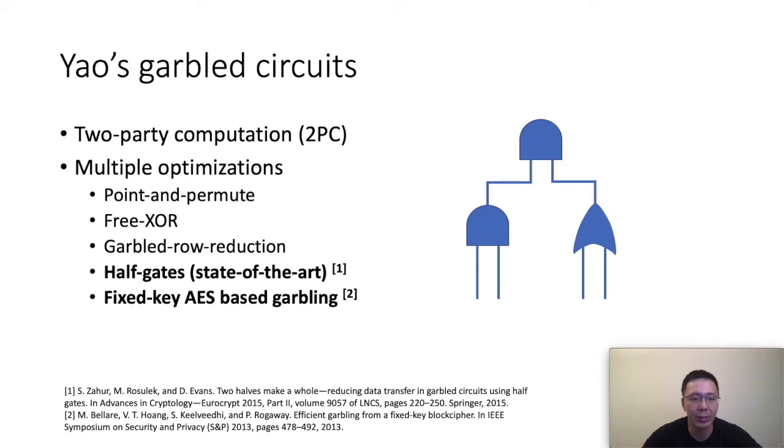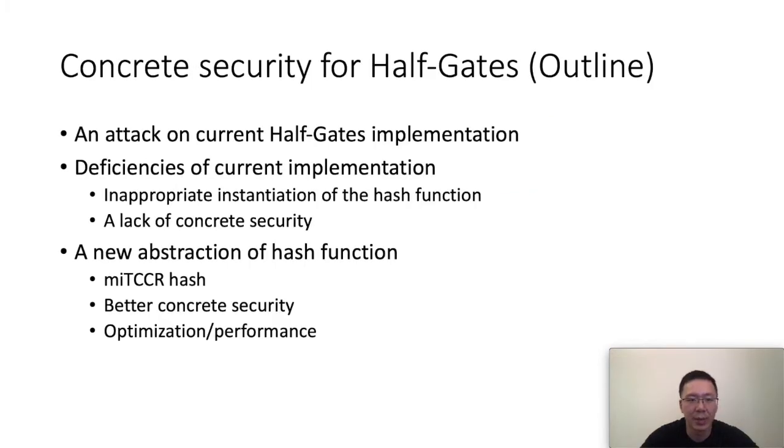It makes full use of hardware support to instantiate the hash function in the half-gate circuit using fixed-key AES. So it reduces the overhead of computation. And we pay attention to these two optimizations because we find that when the hash function in the half-gate is instantiated with the fixed-key AES, there could be a compromise of security.